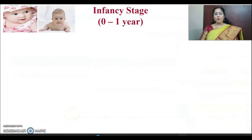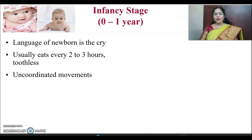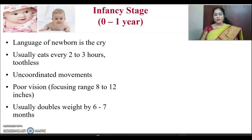Let's focus on what happens in each stage. Zero to one year, the life stage called as infancy. The language of the newborn baby is to cry and smile — only these two things the child knows. The child usually eats every two to three hours and is toothless. Uncoordinated movements could be seen in these children. They have poor vision at the time of birth and could focus a range between eight to twelve inches.